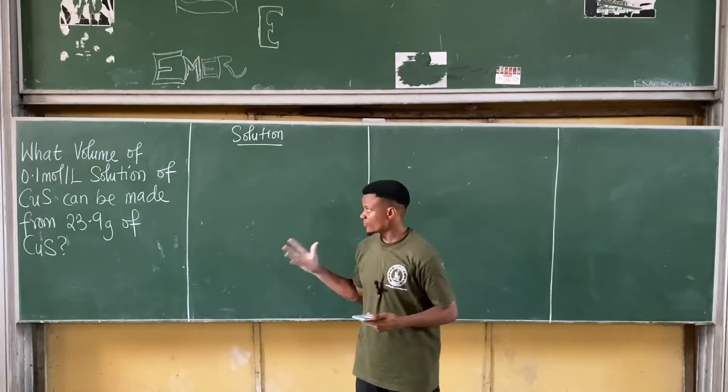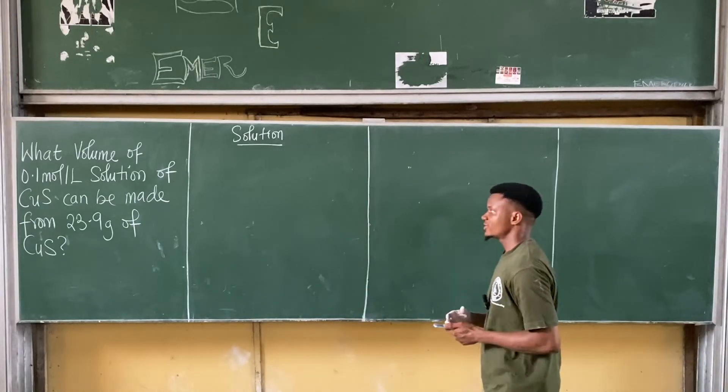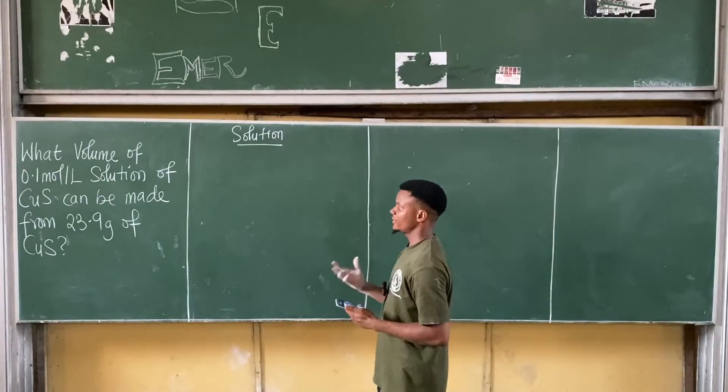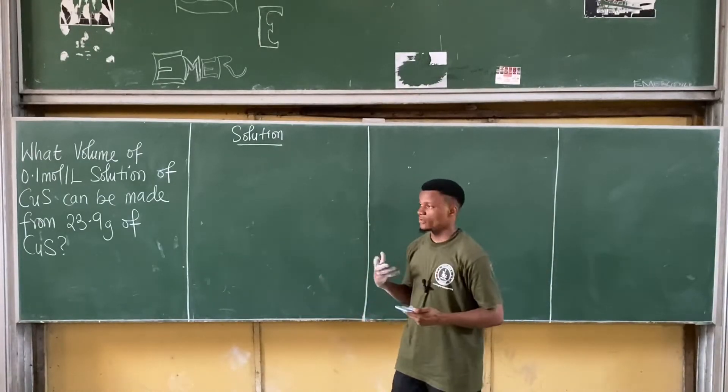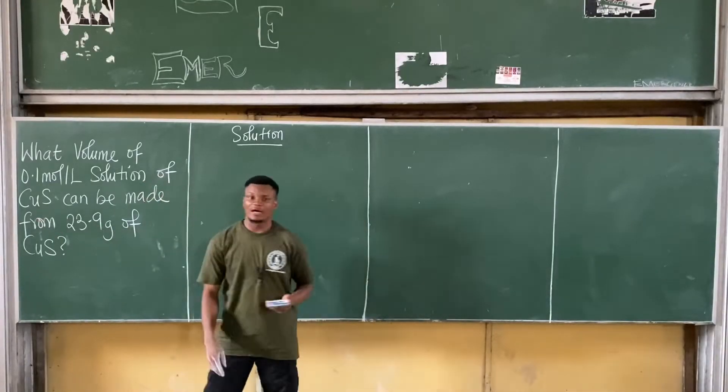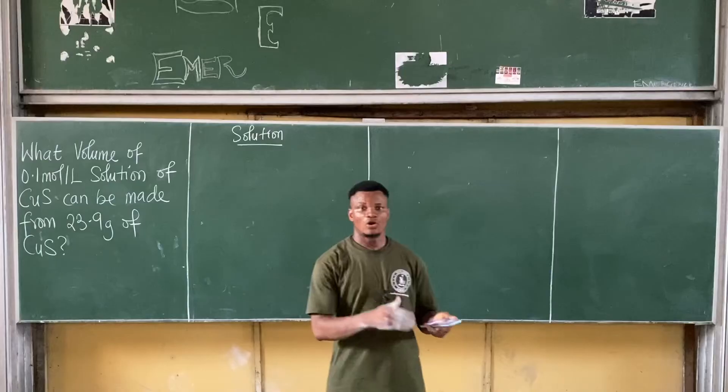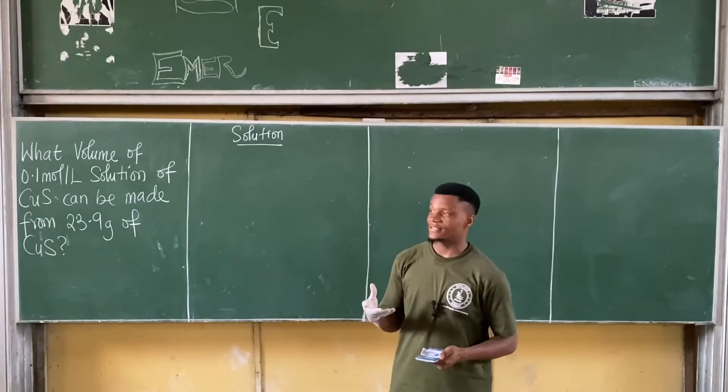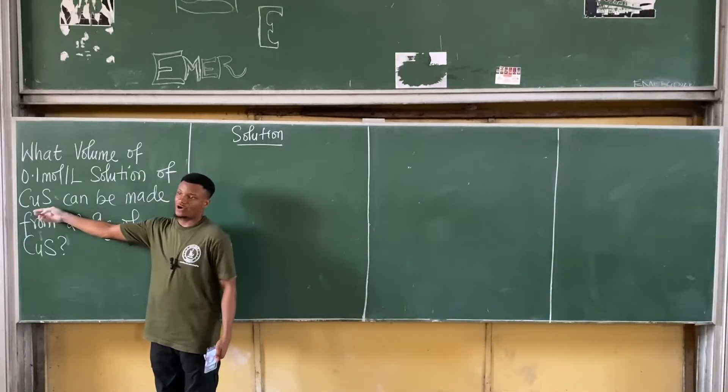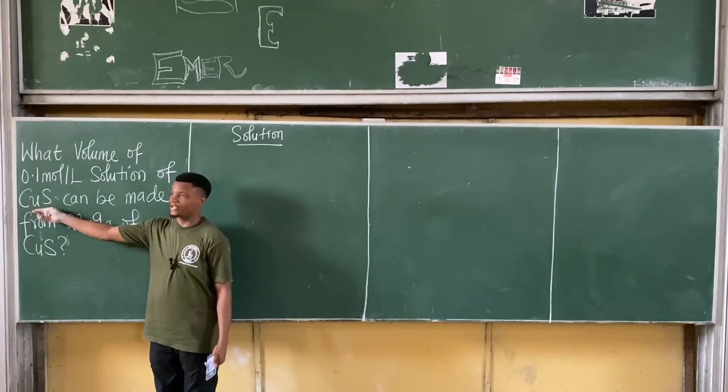Let's take this question here. This question says, what volume of 0.1 mole per liter solution of CuS? CuS is the formula for a compound called copper 2 sulfide. So CuS is pronounced copper 2 sulfide or perhaps copper sulfide in short.